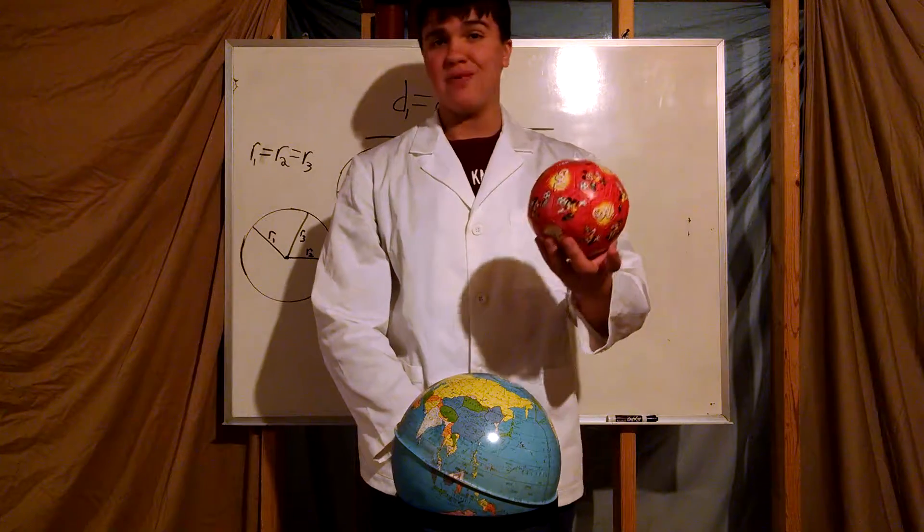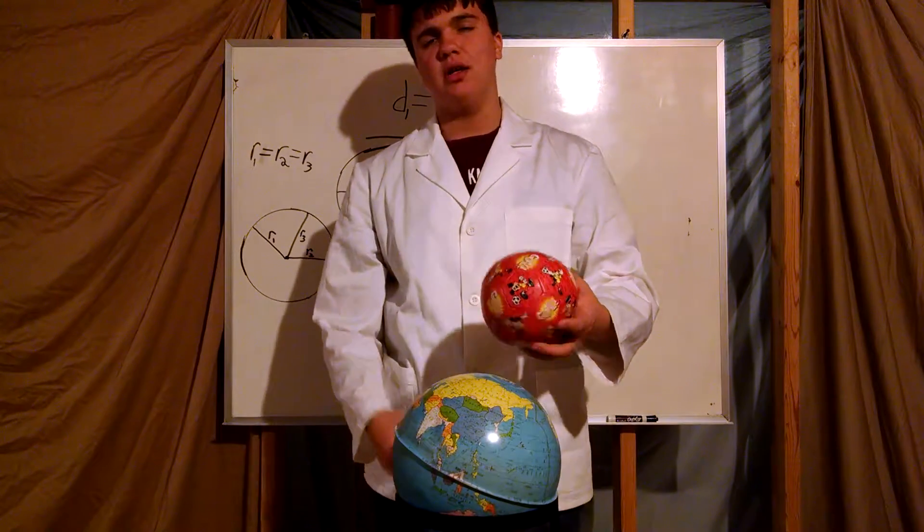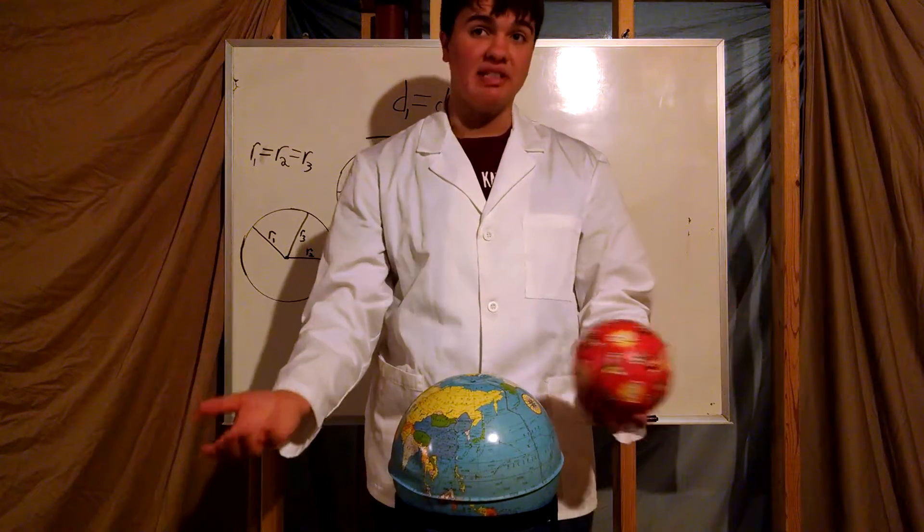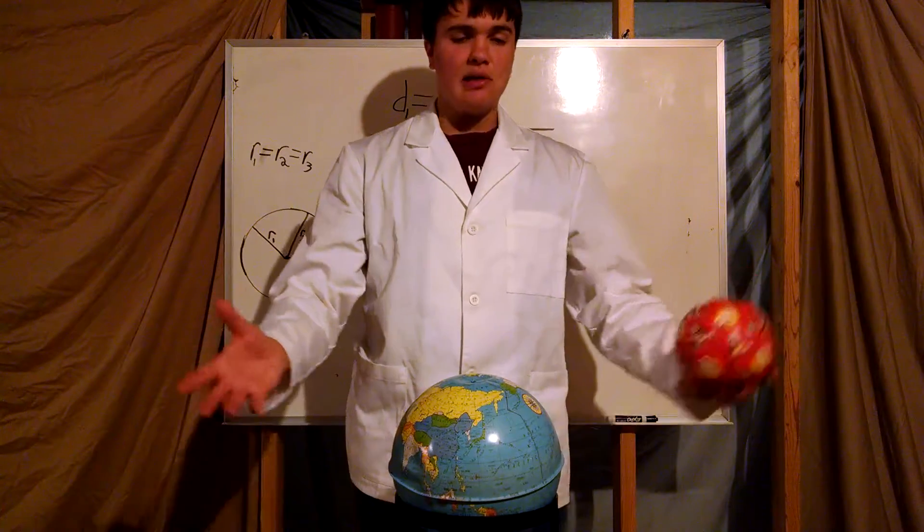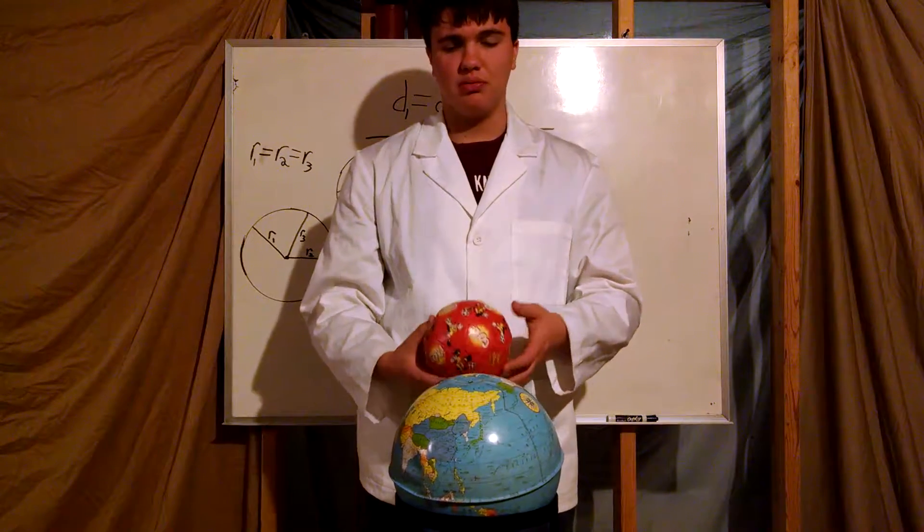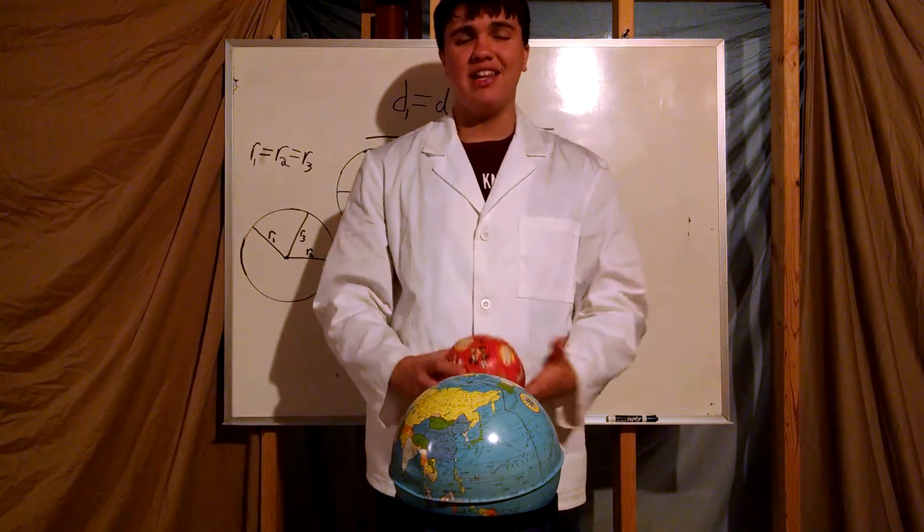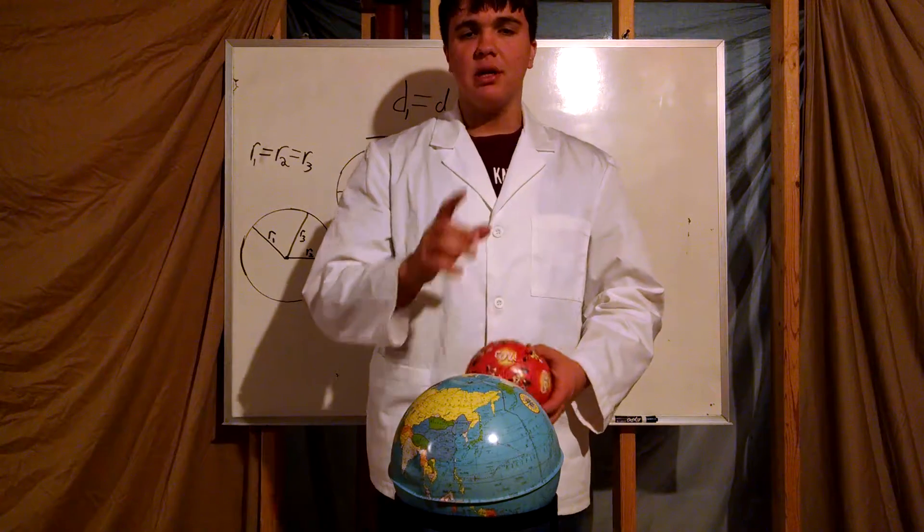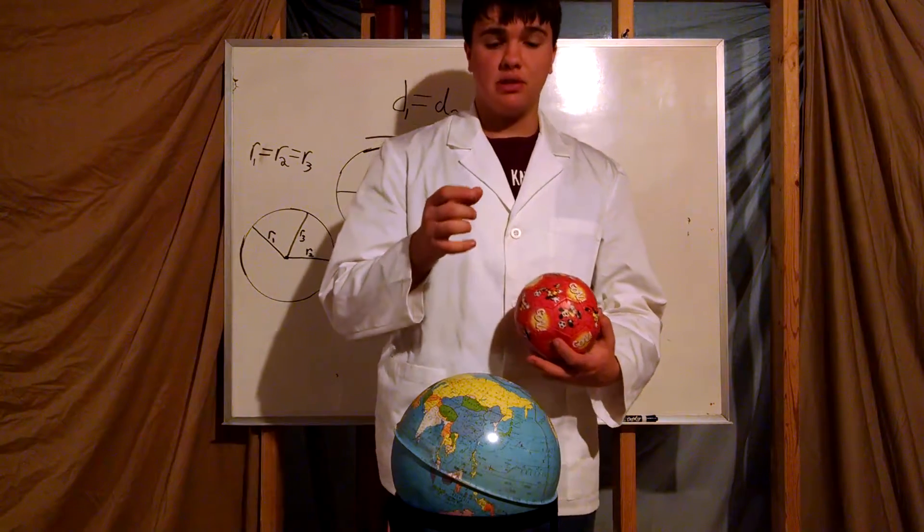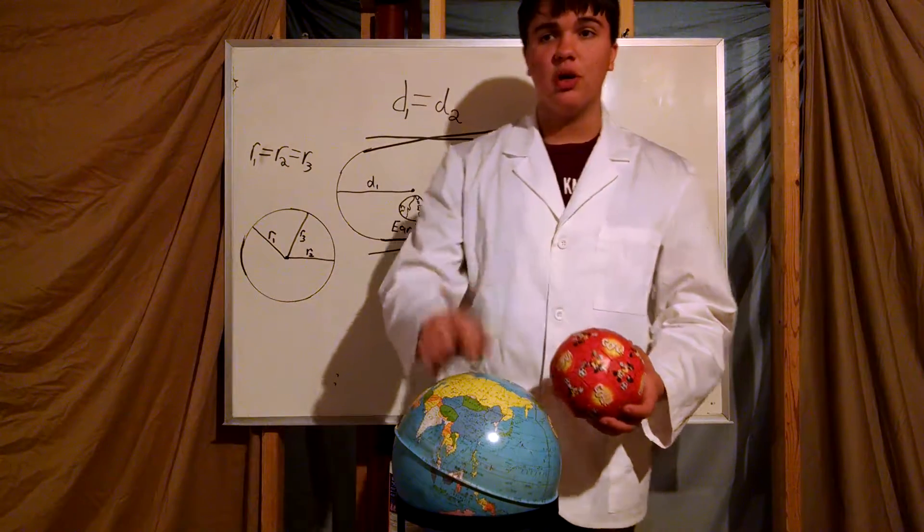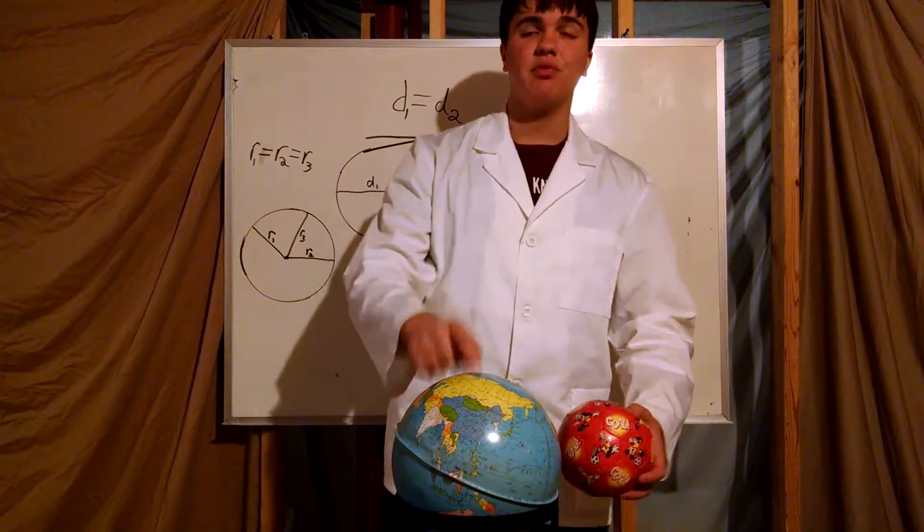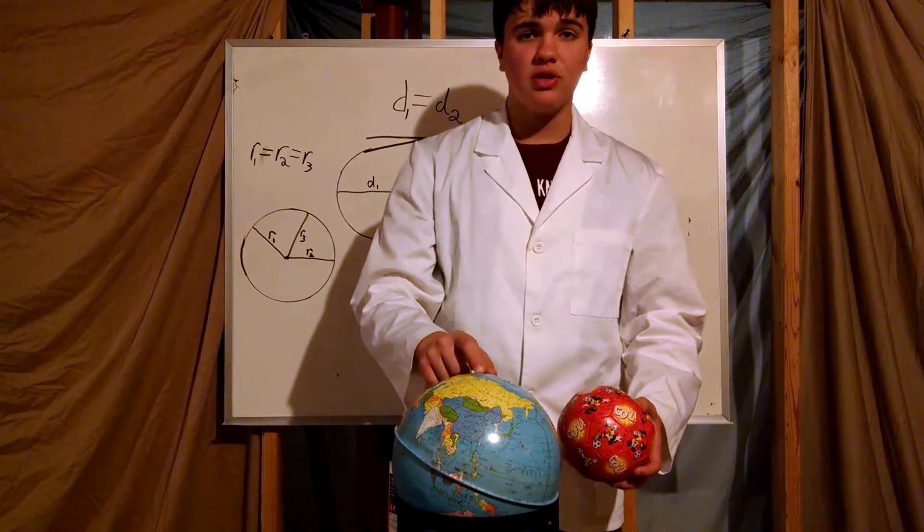Then a Mars-sized object named Theia came smashing in. Now, if Theia had hit Earth straight on, we probably wouldn't have a moon in the first place. The two objects probably would have merged, and the Earth would just be a little bit bigger. And life probably wouldn't have happened. Because it was thanks to Theia that we got our 23.5 degree tilt. It was because of Theia that we got our 24 hour day-night cycle. And it was because of Theia that we have a 365 and a quarter day year.